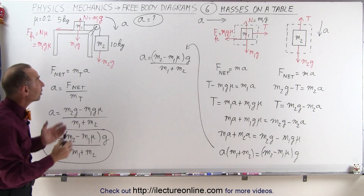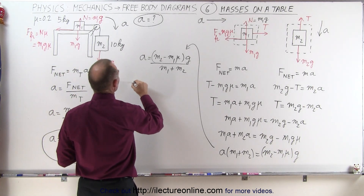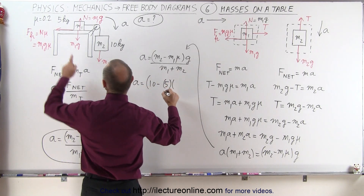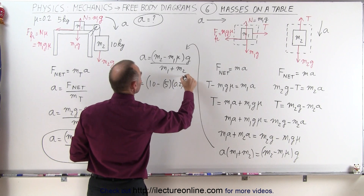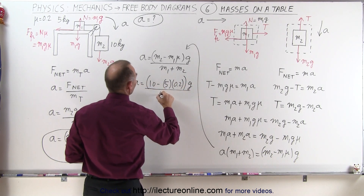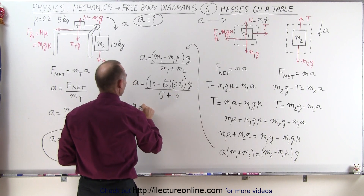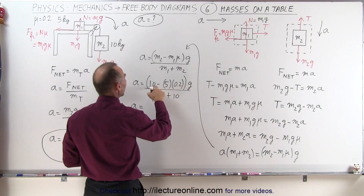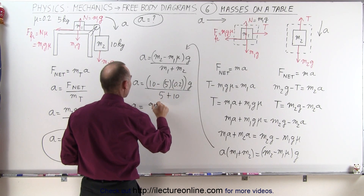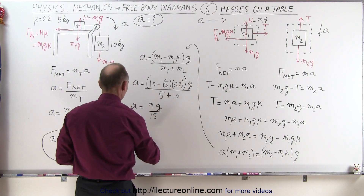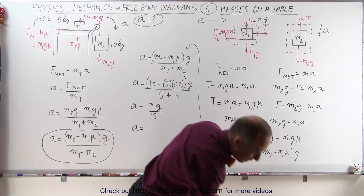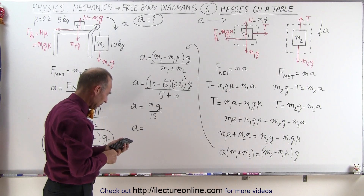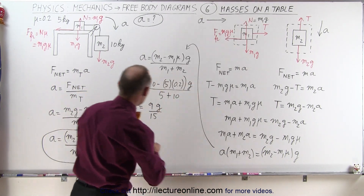Now let's plug in the numbers. The acceleration equals m2, which is 10, minus 5 times mu, which is 0.2, times g, divided by 5 plus 10. So that's 10 minus 1, which is 9, times g divided by 15. So a equals (9/15) times 9.8, giving us 5.88 meters per second squared.